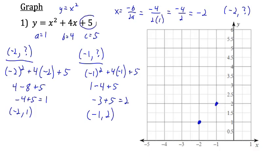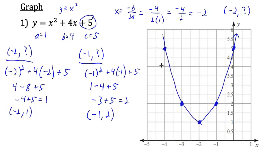Here's where we can save ourselves some work by using the y-intercept clue. The 5 is going to be the y-intercept. The reason we know that is the x-coordinate at the y-intercept will be 0, so if we substituted 0 in for both x's, we'd get 0 plus 0 plus 5. We use this clue to get our y-intercept. We can clearly see what the right half of our parabola looks like, and the left half will be a reflection of the right side. And there's a nice sketch of our graph of y equals x squared plus 4x plus 5.